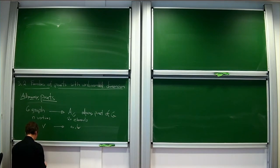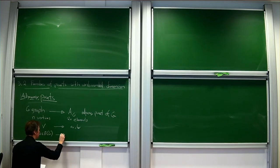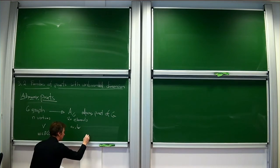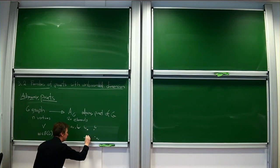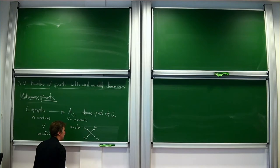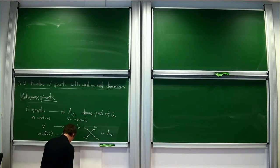A vertex corresponds to an incomparable pair, which we denote by A_v and B_v — these are two elements of the poset, and they are incomparable. In the poset, whenever we have an edge UV in the graph, on the poset side we have four corresponding elements: A_u, B_u, A_v, B_v. The relations imposed by definition are: A_u is below B_v, and A_v is below B_u in the adjacency poset of G.